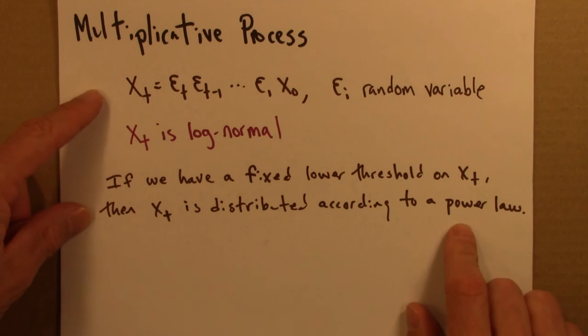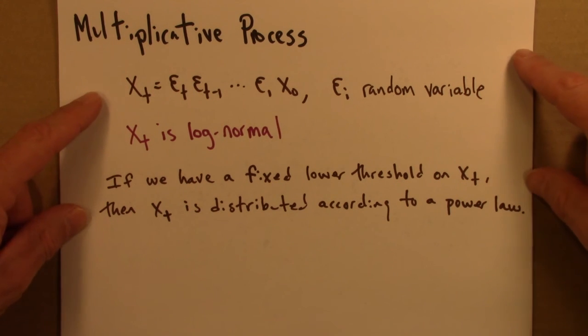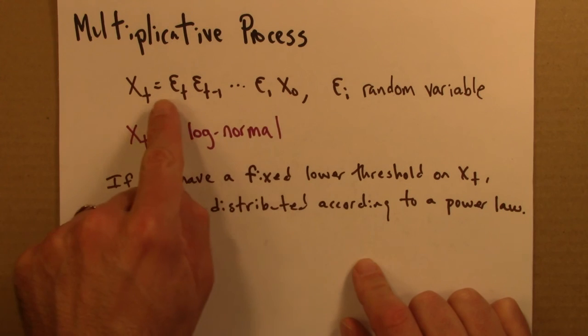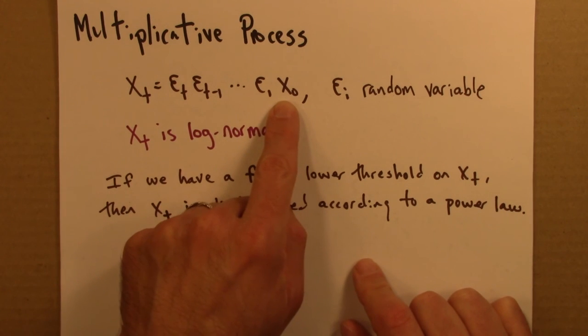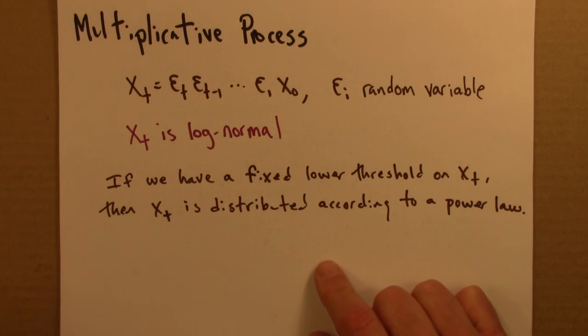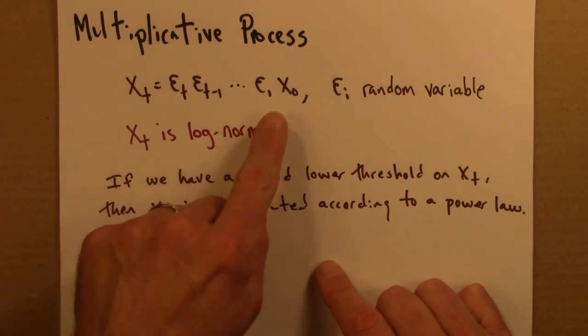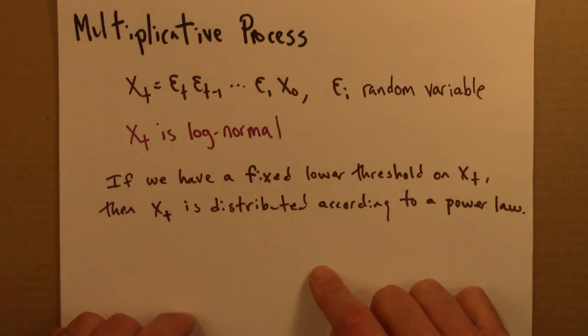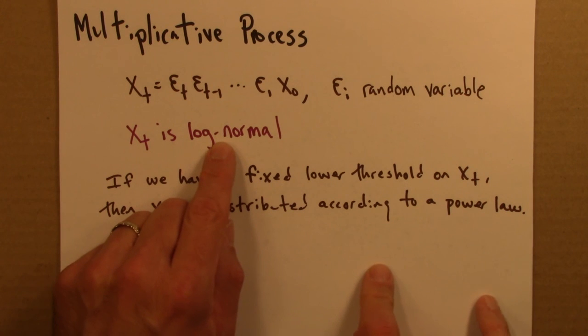Wrapping up, these sorts of multiplicative processes occur pretty frequently. Any time you have growth that's proportional to your current size, when you're growing by a percent, you get 10% bigger, then 4% smaller, then 11% larger, and so on. Any time you have growth on that sort of percent basis, and it's some sort of fluctuating random thing, you'd expect to see log-normally distributed quantities or power law distributed quantities.